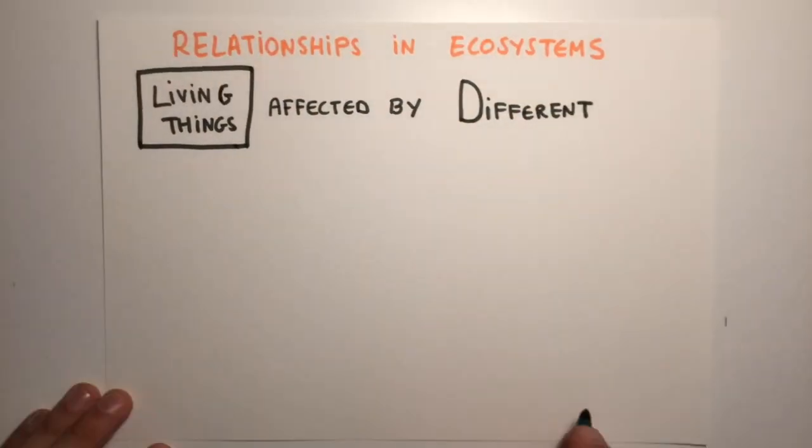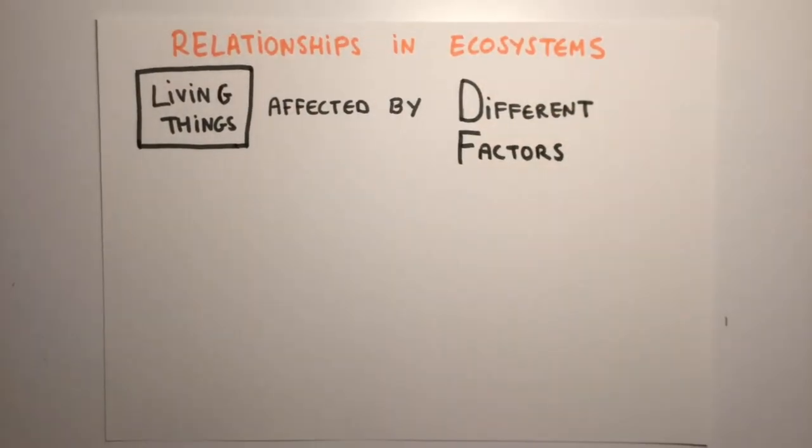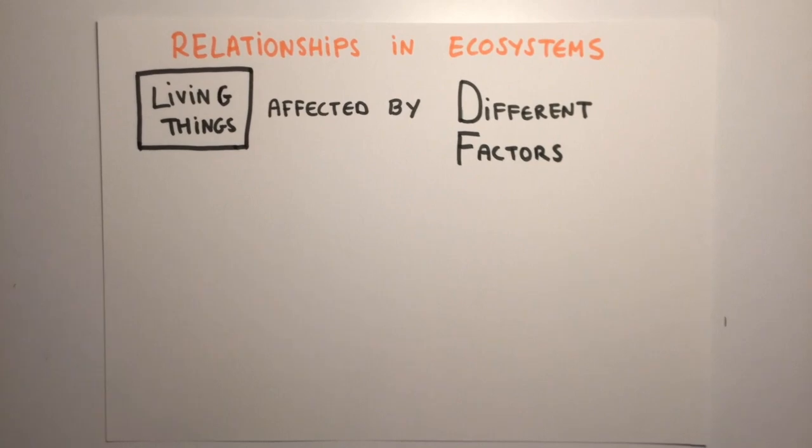Living things are affected by different factors in the environment. Some factors have a greater influence on living things. For example, water is essential for living things in terrestrial environments. However, it's usually a combination of factors that determines which living things can survive in a particular place.